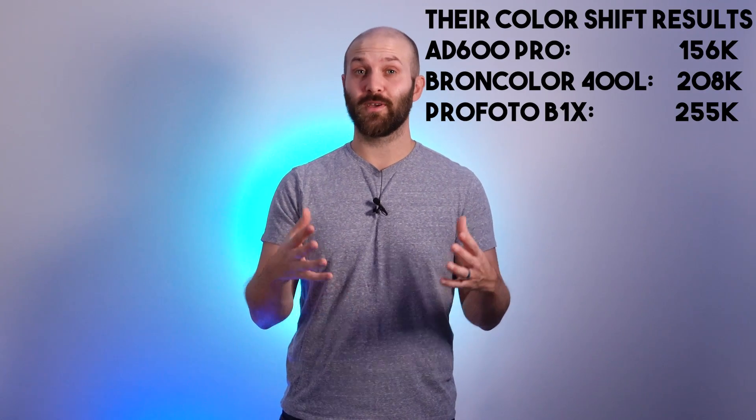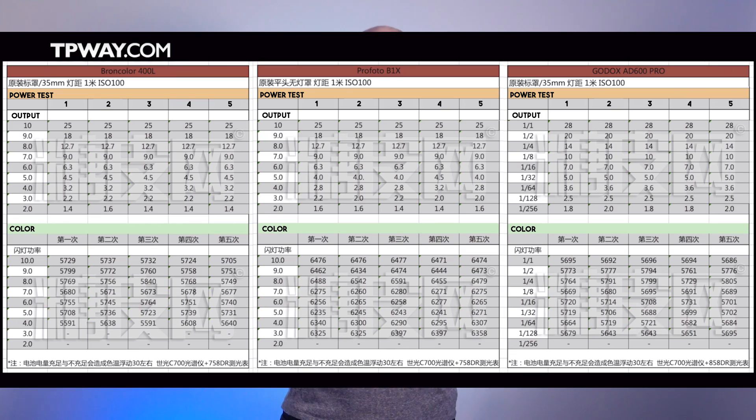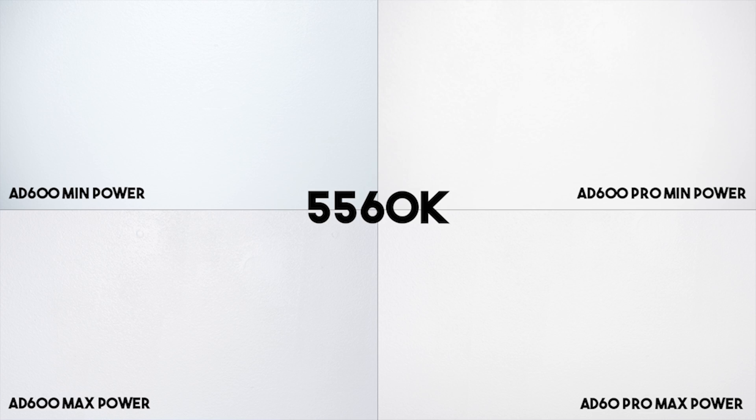It blew me away that out of the three, the AD600 Pro was the best in color accuracy. That video shows their entire 30-minute test, but they did sum it up in this one table and it's really easy to follow. You can tell from the graph that the total color drift that the AD600 Pro experienced over its entire power range was about 170 Kelvin. Now while I can't do that test because I don't have a Broncolor laying around or the Profoto, I hope to do a Profoto comparison down the road like I did previously with the AD600. All I can say is it's really well improved over the previous AD600 which experienced up to a 400 Kelvin shift over its entire power range.